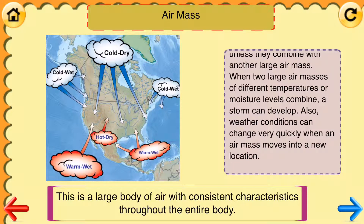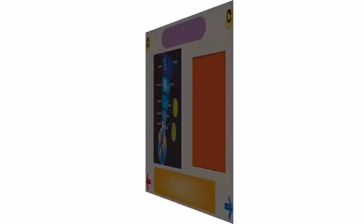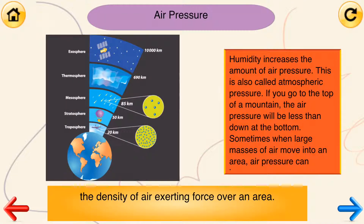Also, weather conditions can change very quickly when an air mass moves into a new location. Air pressure is the density of air exerting force over an area. Humidity increases the amount of air pressure, also called atmospheric pressure. If you go to the top of a mountain, the air pressure will be less than down at the bottom. Sometimes, when large masses of air move into an area, air pressure can increase.